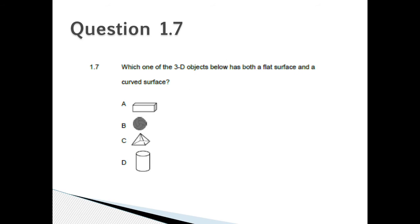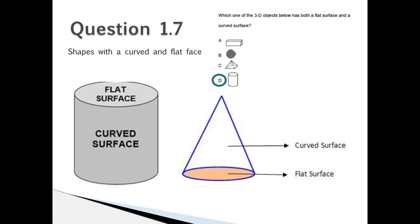Question 1.7: Which one of the 3D objects below has both a flat surface and a curved surface? The first one is a cuboid, the second one is a sphere, C. is a square base pyramid, and D. is a cylinder. A cylinder and a cone are two shapes that have a curved surface and a flat surface, so the answer for question 1.7 is D. A cylinder.